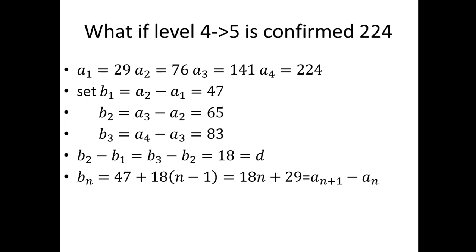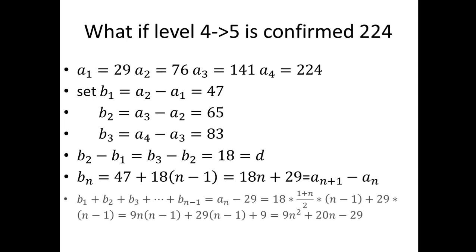So you can pass all the B sequence until Bn minus 1. If you sum all of them, you will get An minus A1. So the result is 9n squared plus 20n minus 29.